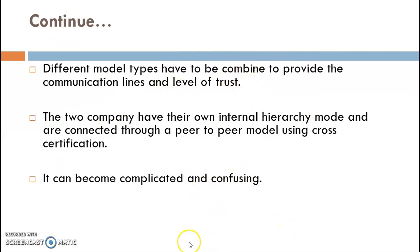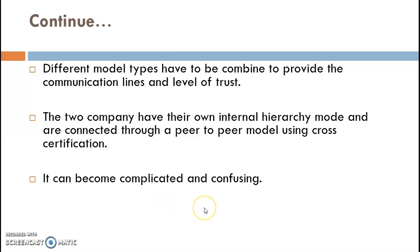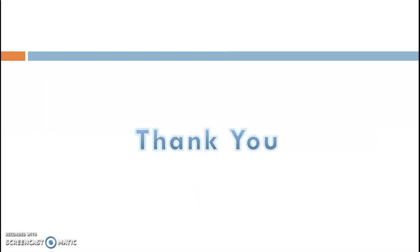The hybrid trust model is a combination of two or more trust model types combined to provide communication lines and levels of trust. Two companies may have their own internal hierarchical model and also be connected through a peer-to-peer model using cross-certification. Such a model can become complicated and confusing because it involves various kinds of models — both the hierarchy order and peer-to-peer relationships with cross-certification are maintained simultaneously. Thank you for listening.